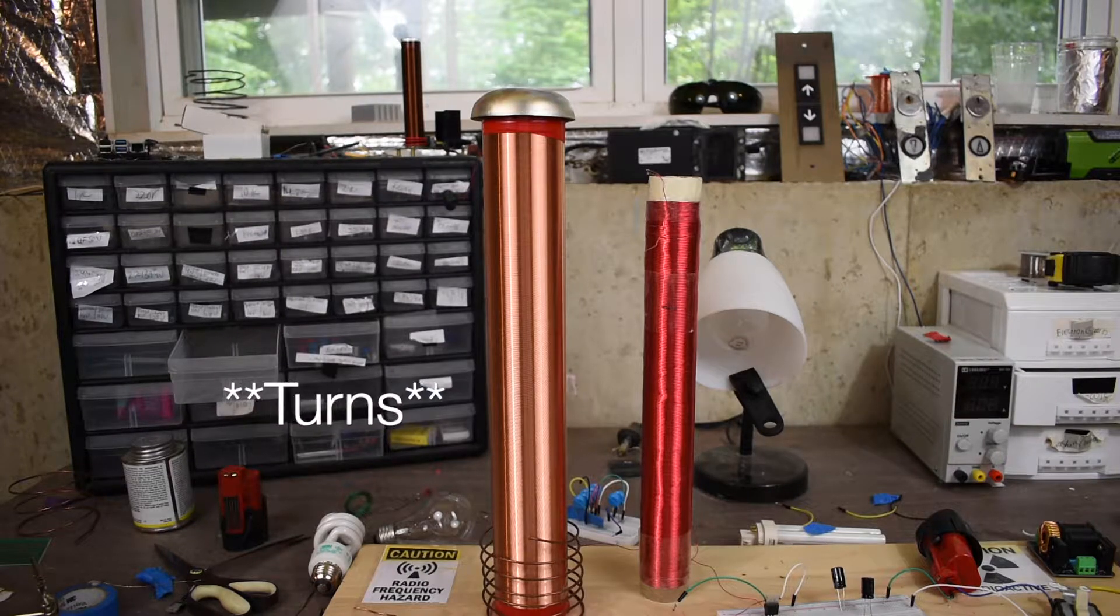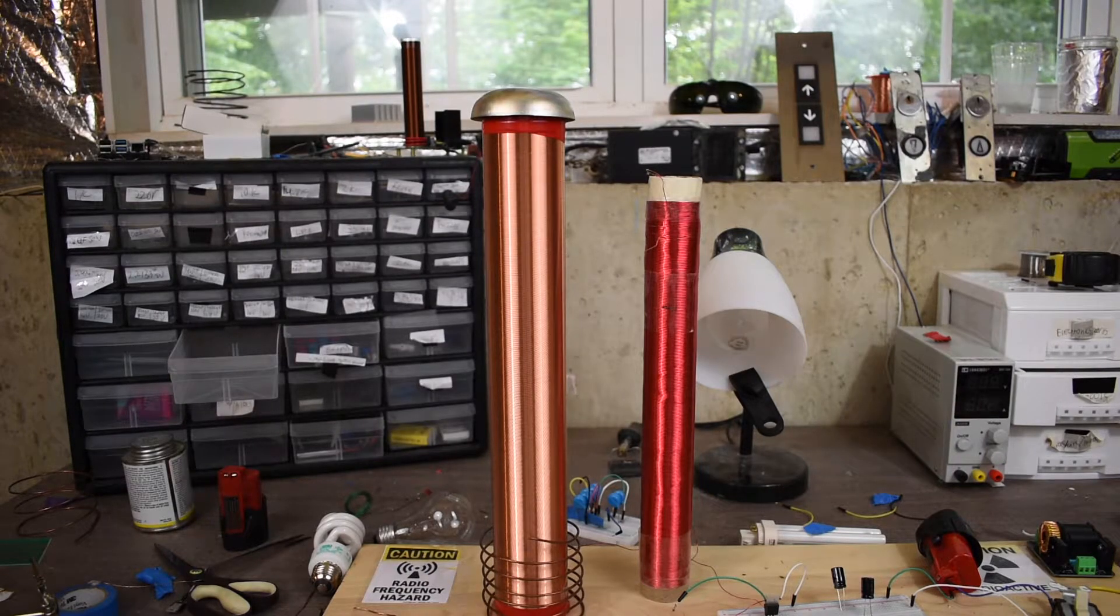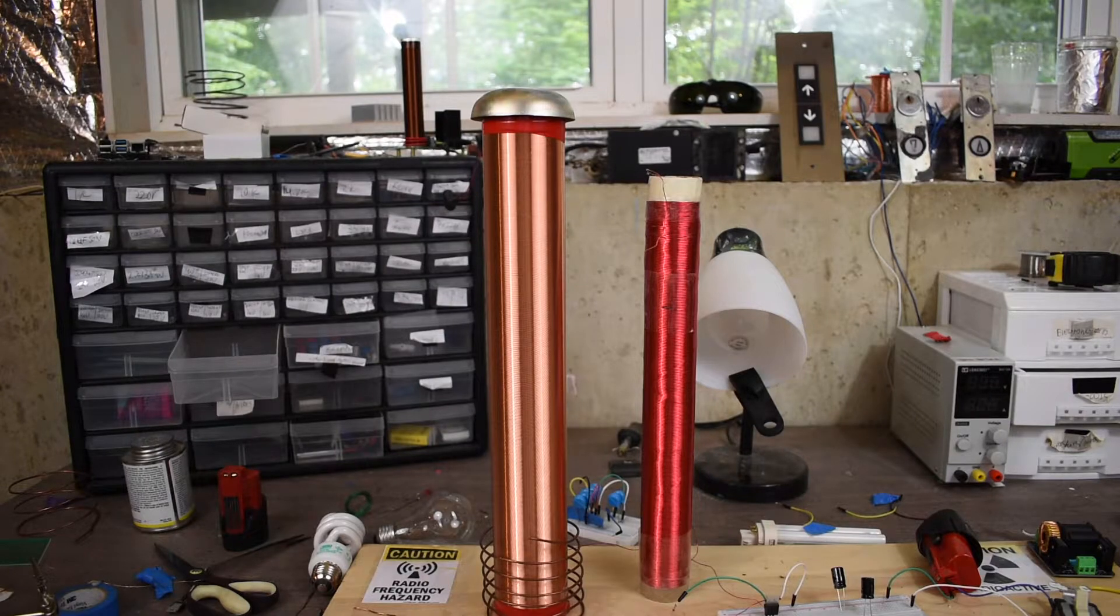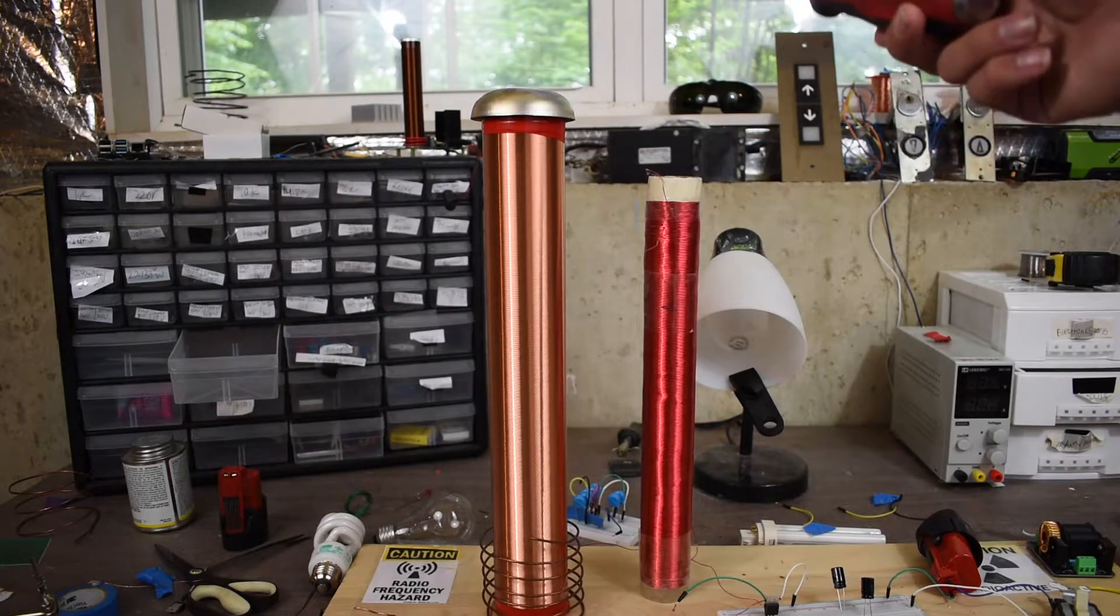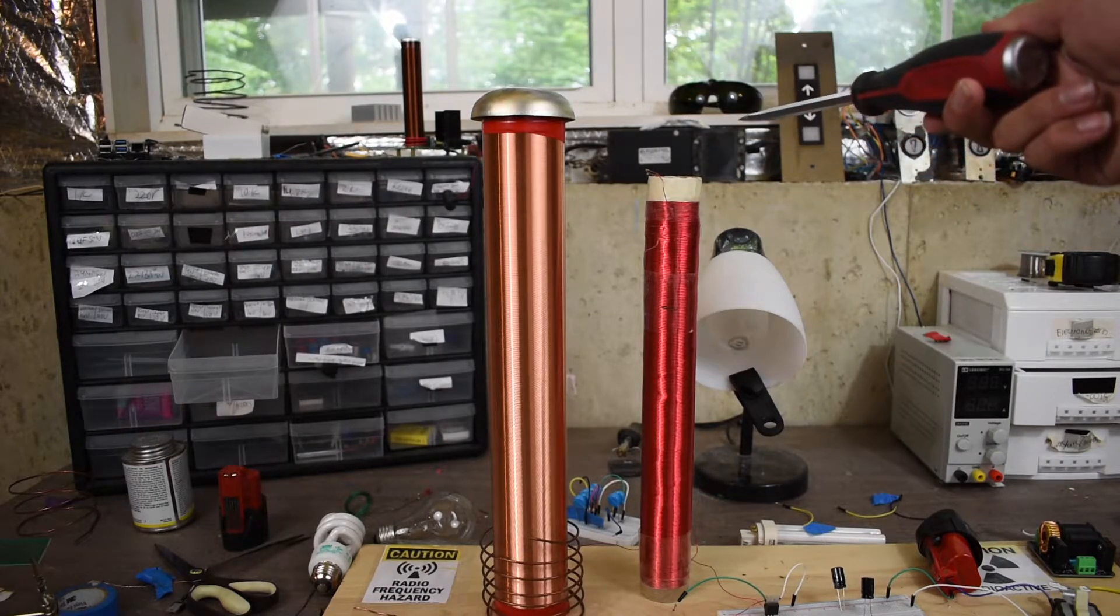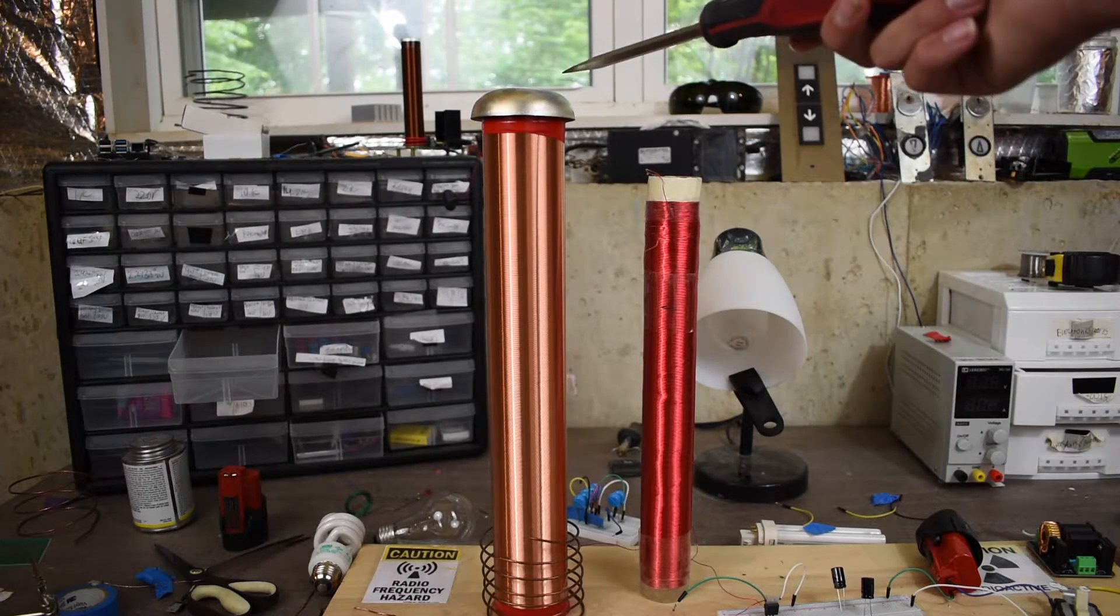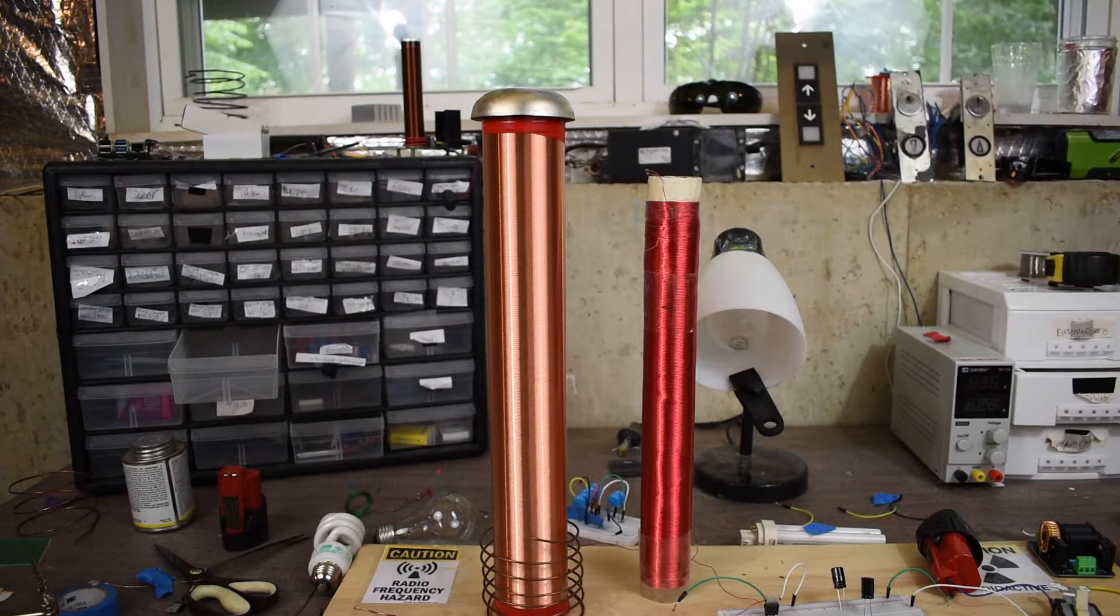The more secondary turns you have, the more electricity and the more radiated energy you're going to get out of it. So for example, if I were to use this secondary coil over here, I'd only maybe be able to turn on a bulb within a few inches, but this one I could turn a bulb on from over a foot away. So yeah, it definitely makes a big difference with how many turns of secondary you have.